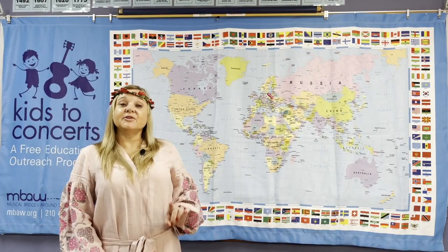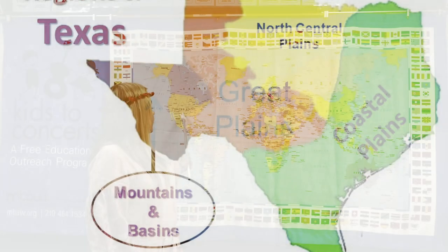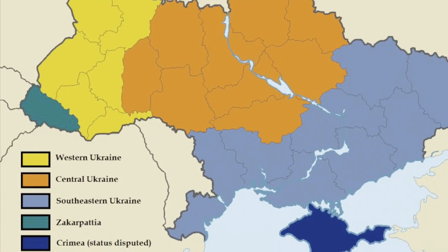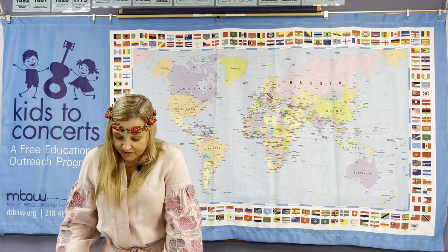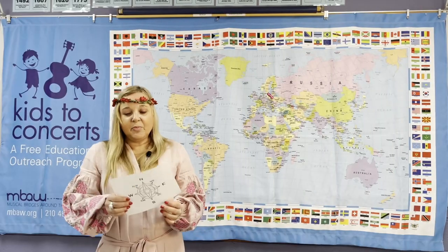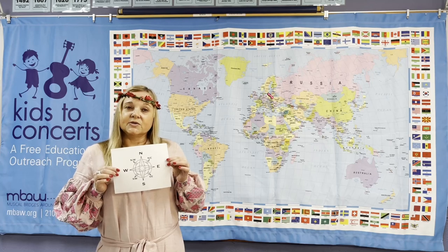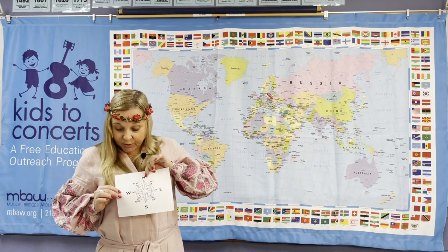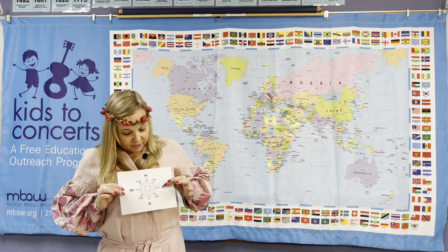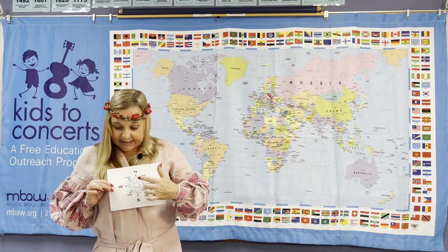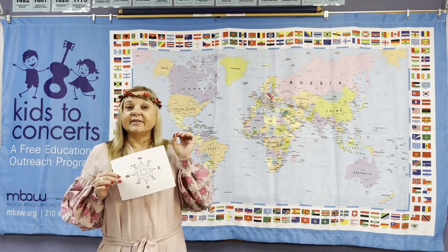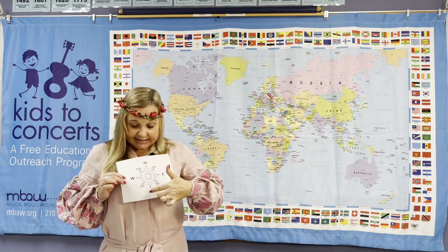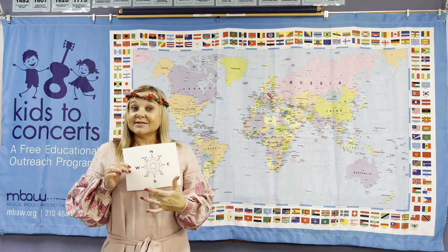Today, we'll learn about the geography of Texas and Ukraine. I bet you already know a lot of facts about Texas. We'll begin by using something called a compass rose. A compass is a symbol used on a map to help us know which way to go. A compass has four letters: N for North, E for East, S for South, and W for West. An easy way to remember the letters on a compass rose is to use this acronym: Never eat soggy waffles. Can you say that with me? Never eat soggy waffles.